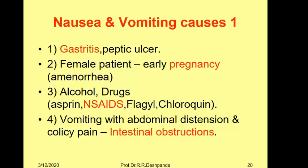In female patients in the early period — first 2-3 months of pregnancy — there is amenorrhea as well as nausea and vomiting, known as morning sickness. Some medicines like aspirin, NSAIDs (non-steroidal anti-inflammatory drugs), metronidazole, tinidazole, and chloroquine — a famous medicine to treat malarial fever — as well as alcohol consumption are also causes of vomiting.